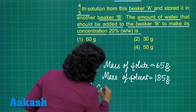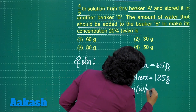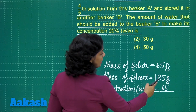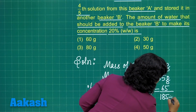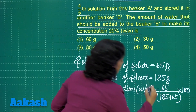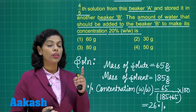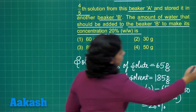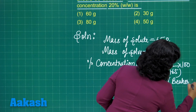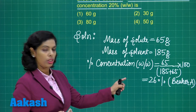The percentage concentration (weight by weight) = 65 / (185 + 65) × 100 = 65/250 × 100 = 26%. This is the concentration of the solution present in beaker A. The total mass of solution in beaker A is 250 grams.